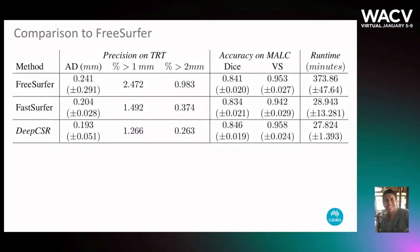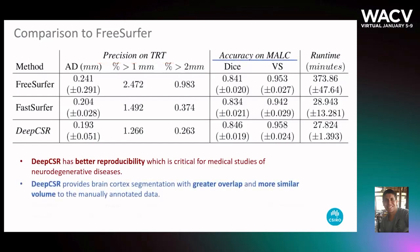Our results show that DeepCSR is more precise, accurate, and faster than the widely used FreeSurfer and its deep learning version FastSurfer.